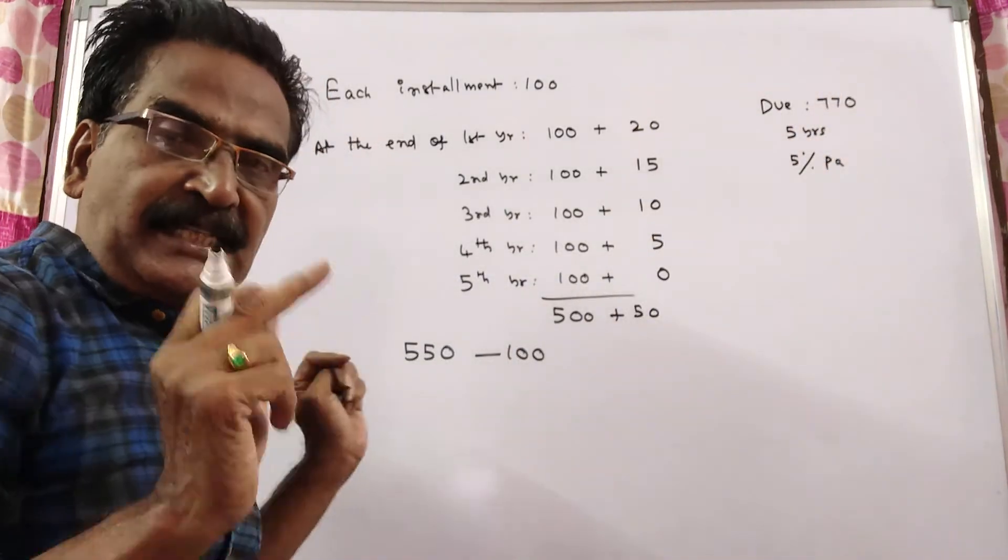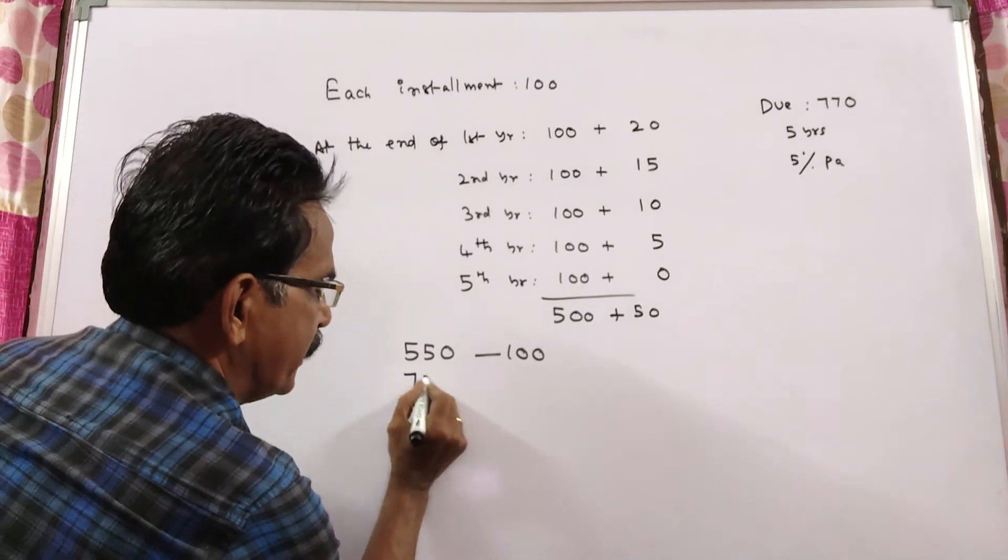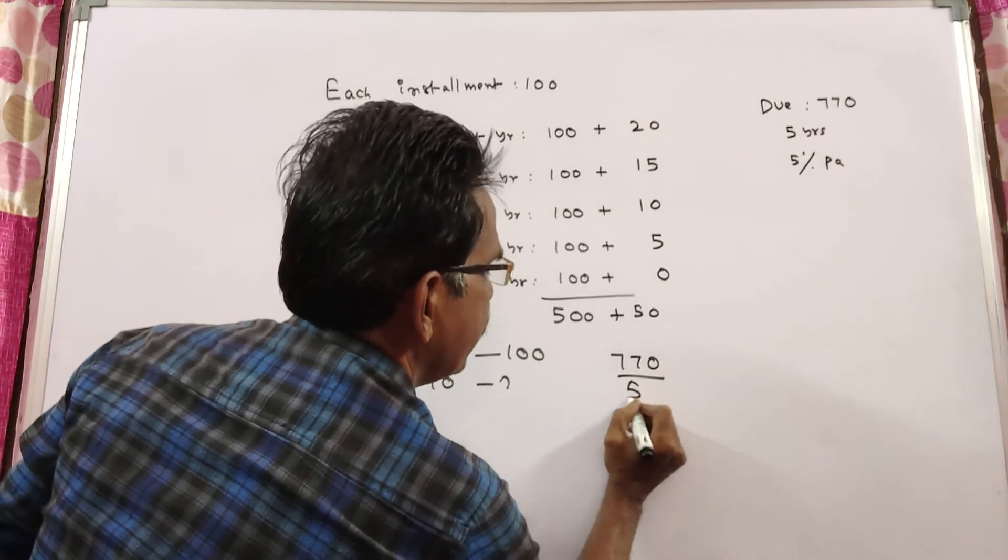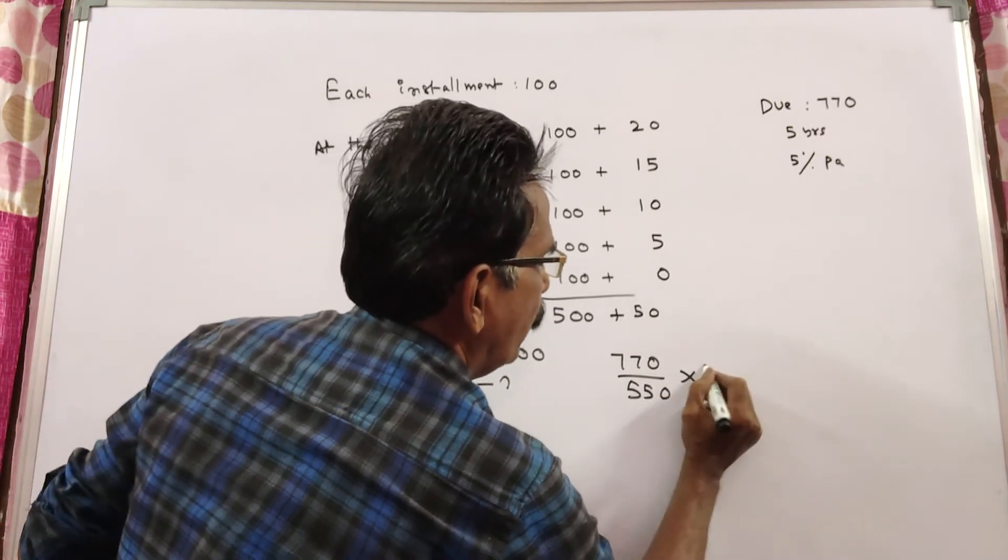If the total due is Rs. 770, then what is the installment? 770 by 550, by 550 into 100, into 100.